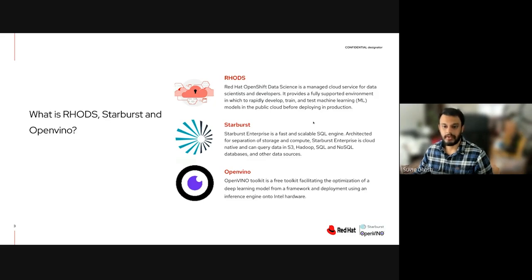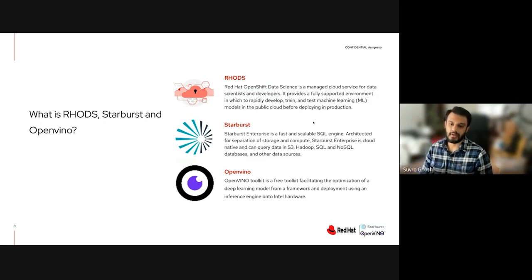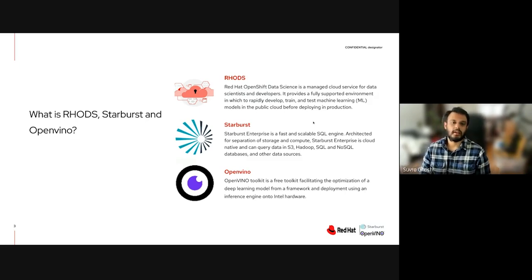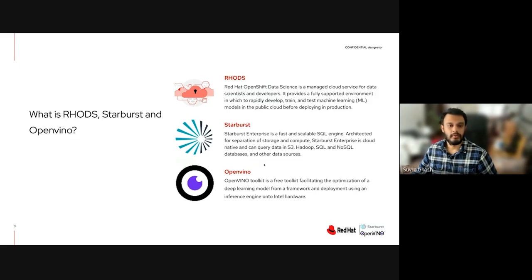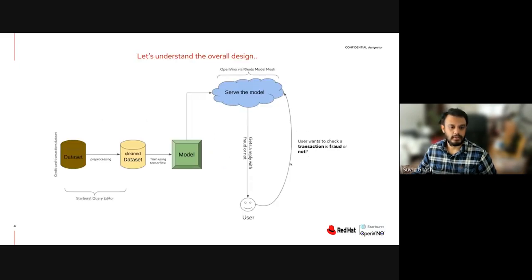Starburst is a fast and scalable SQL engine architected for separation of storage and compute. Starburst Enterprise is cloud-native and can query data in S3, Hadoop — basically, Starburst can have multiple data sources displayed to you in one dashboard. OpenVINO is an Intel toolkit; it provides a kernel and also a model server which we will use to serve our model.